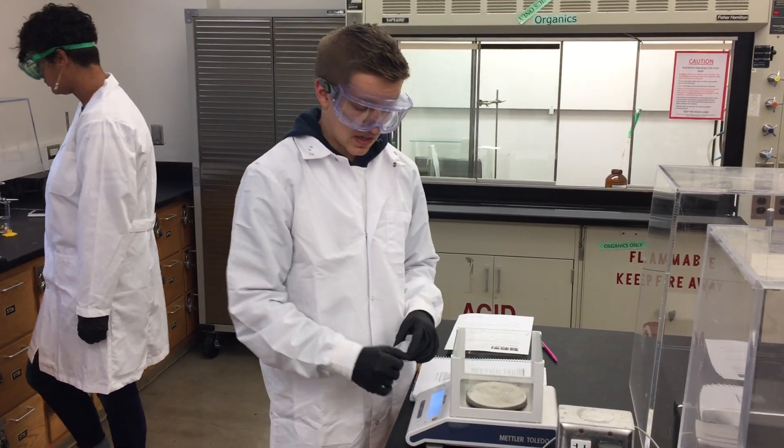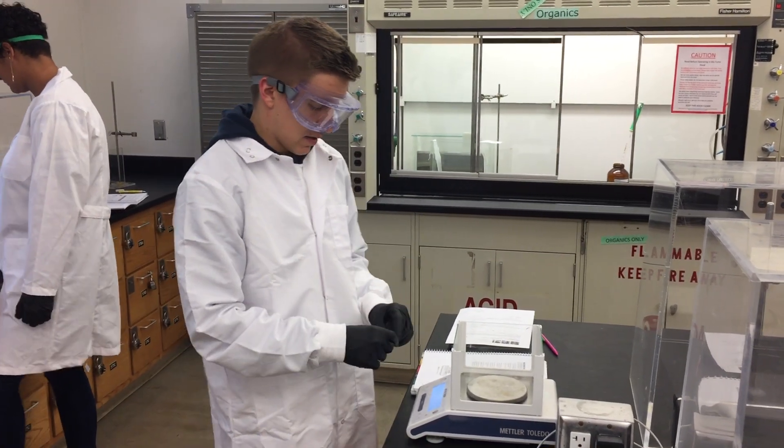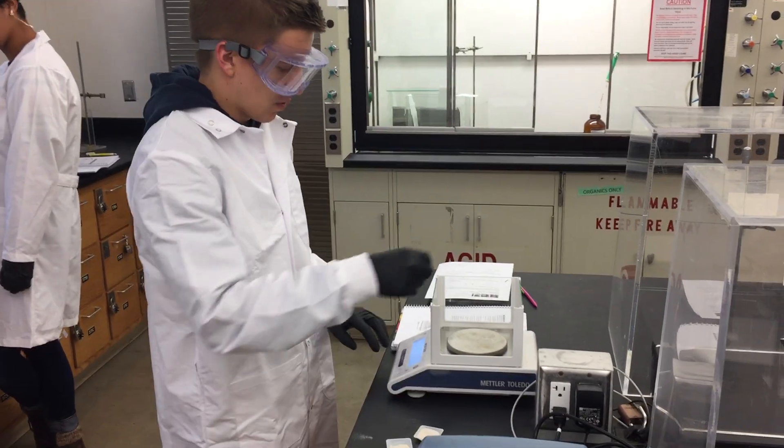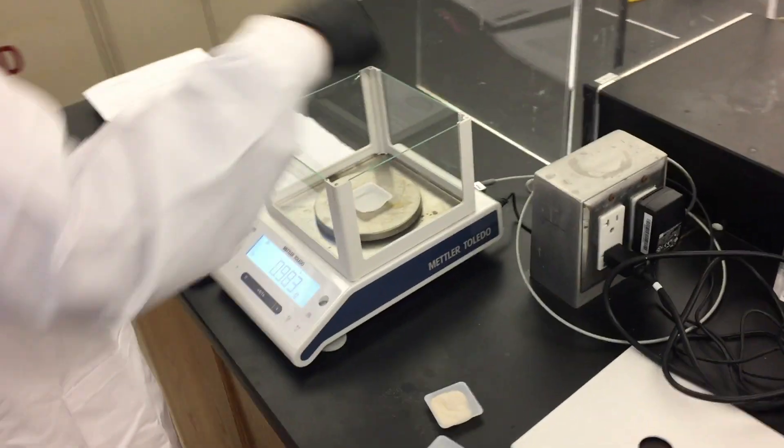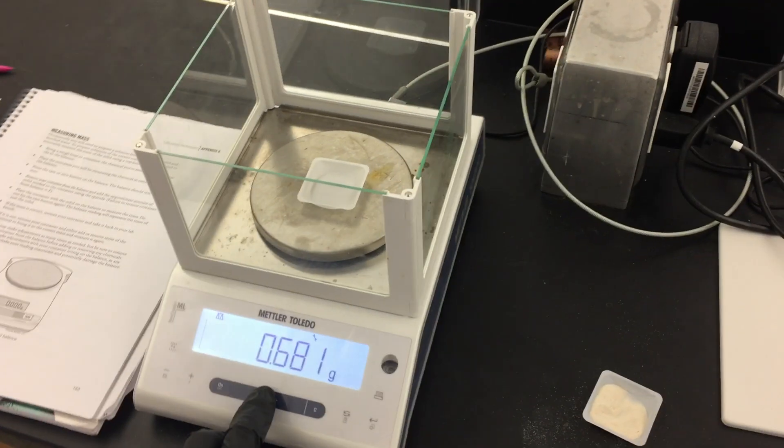When we start, we want to make sure it's at zero. Then we have a weigh boat, and we will place the weigh boat on the scale in the center. After we get the reading, we will zero it out.